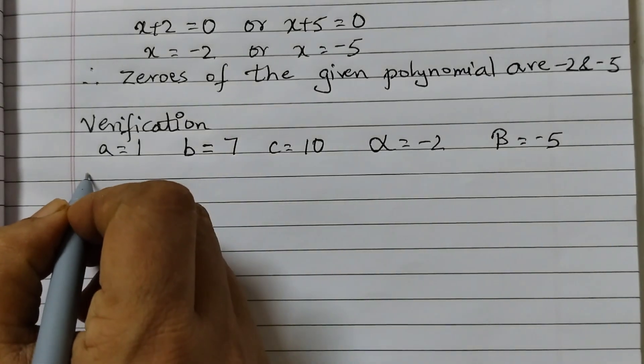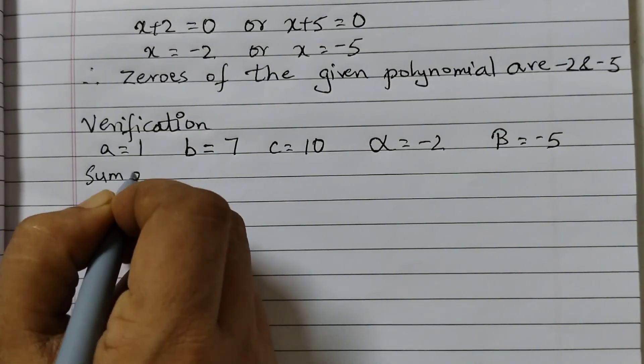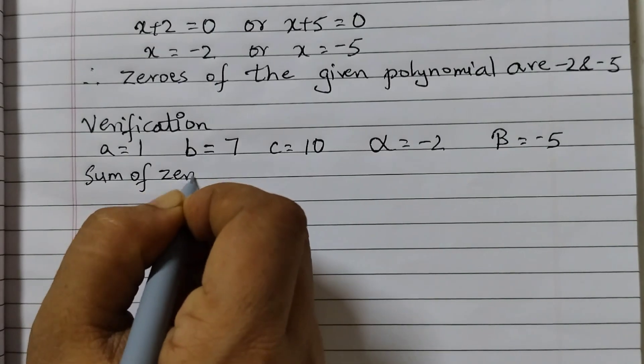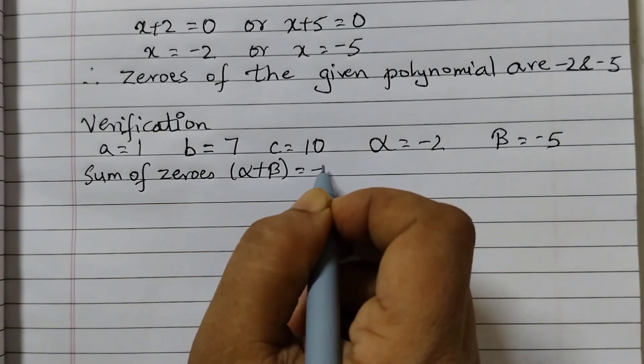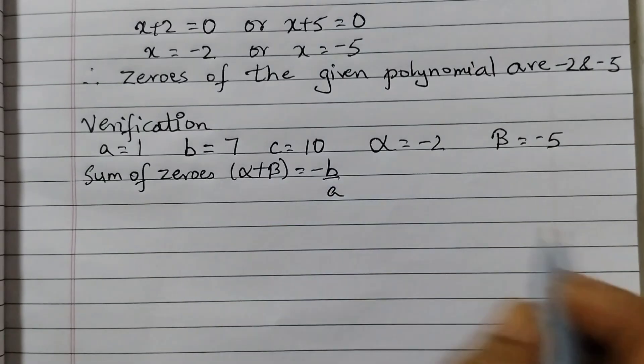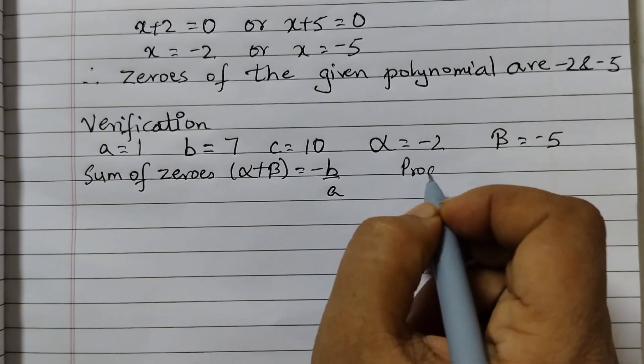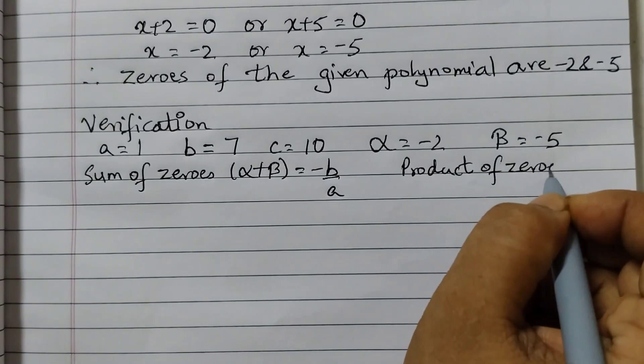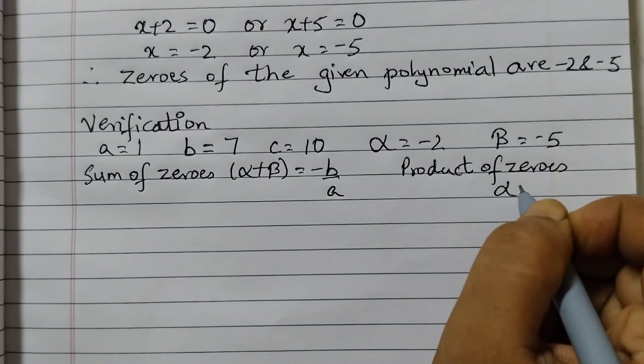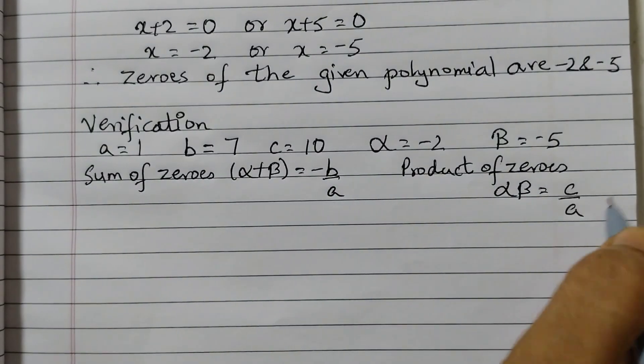For verification we need to prove that sum of zeros alpha plus beta is equal to minus b by A and product of zeros which is alpha into beta is equal to C by A.